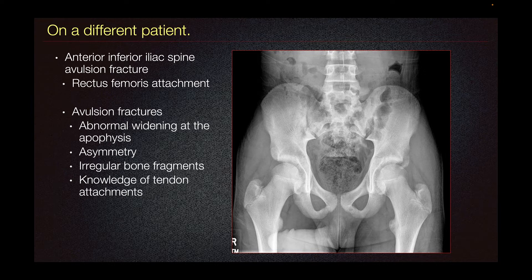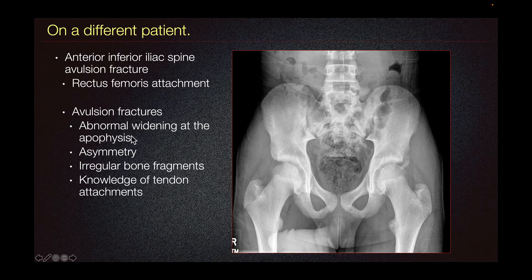Avulsion fracture is usually the result of a sudden forceful concentric or eccentric contraction of the muscle attached to the apophysis. Avulsion fractures of the pelvis are most common in young athletes due to the discordance between increased muscle strength and unfused physis at the muscle-tendon-bone unit. Avulsion fracture would typically demonstrate abnormal widening at the apophysis, such as here.